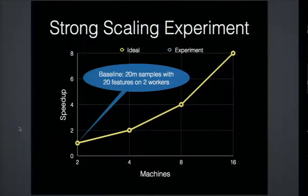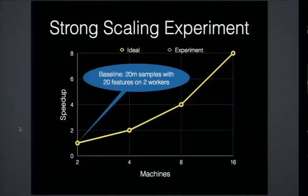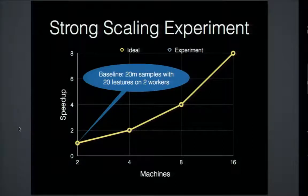Now let's look at experimental results on distributed data sets. The first experiment was strong scaling, where you keep the data set size the same and vary the number of machines to see how the implementation scales. The x-axis shows number of machines — 2, 4, 8, and 16 — and the y-axis shows speed-up compared to the baseline of 20 million samples with 20 features on 2 workers. The ideal speed-up going from 2 to 4 machines is 2x, from 2 to 8 is 4x, and from 2 to 16 is 8x.